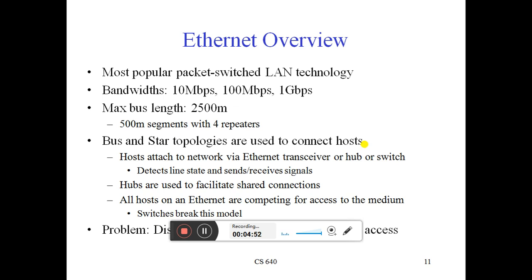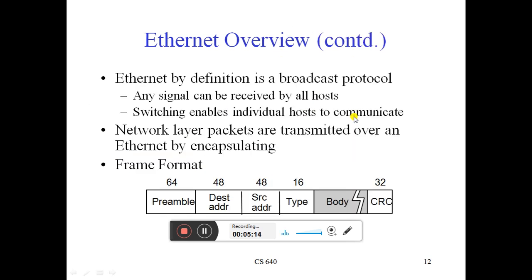The overview is that Ethernet has different bandwidths, which affect the communication channel. It operates at 10 Mbps, 100 Mbps, and 1 Gbps bandwidth. The maximum bus length is 2500 meters, and from that it can separate and control values, with different access points to check network values. The structure has a preamble, source, and type of network.